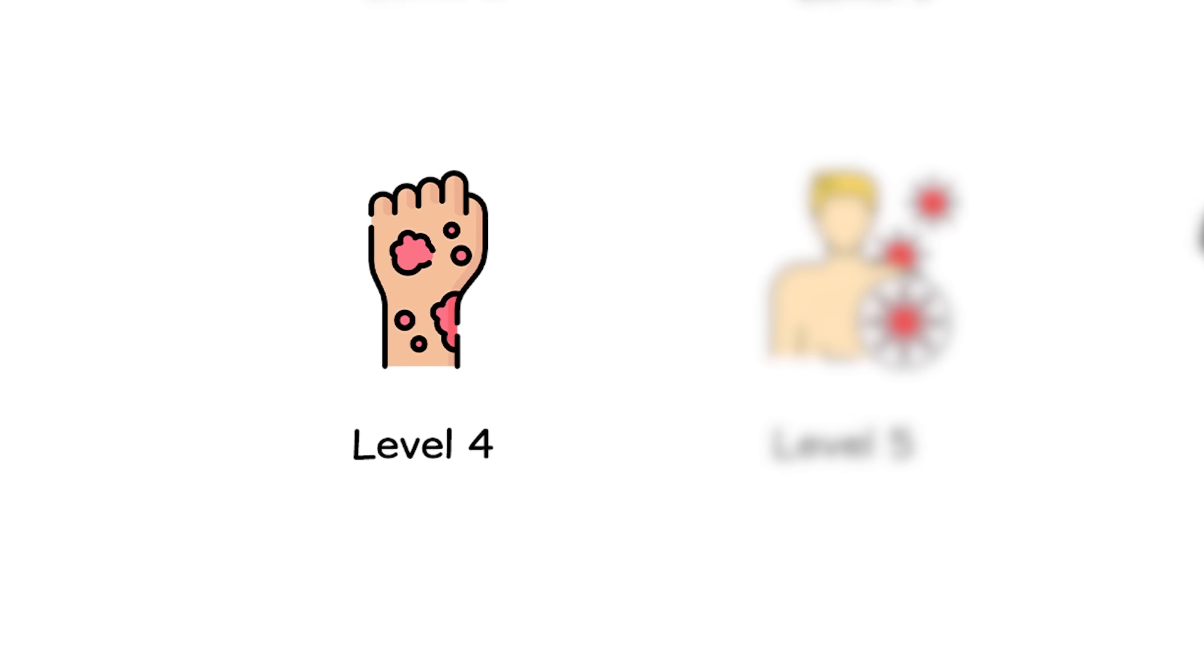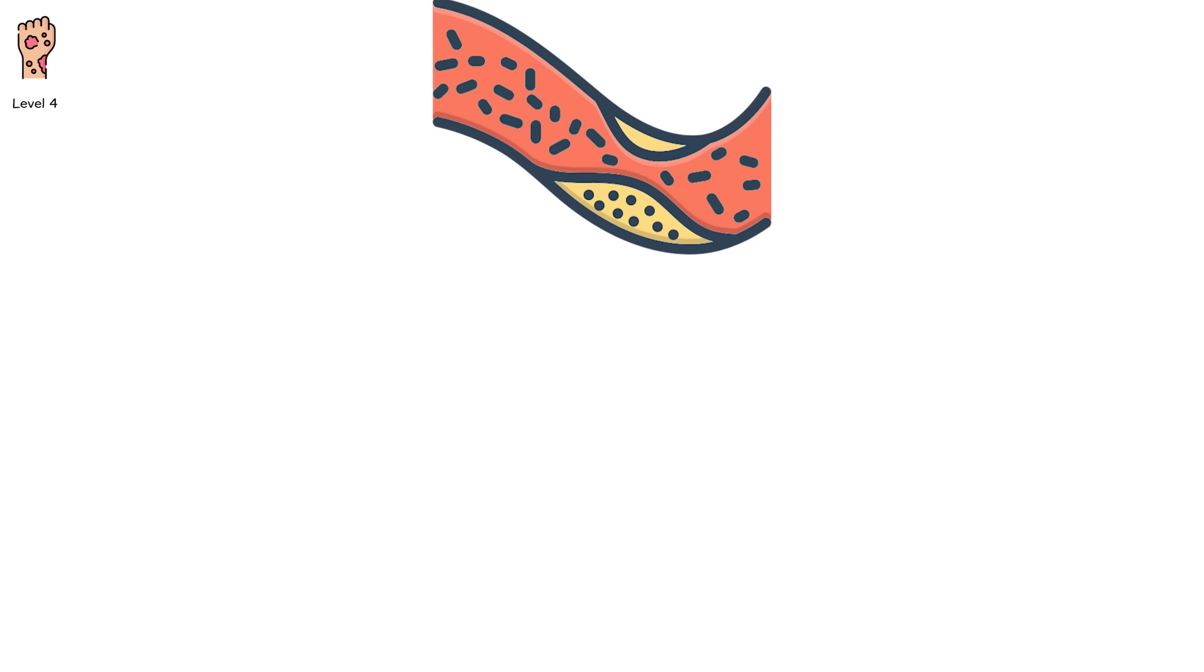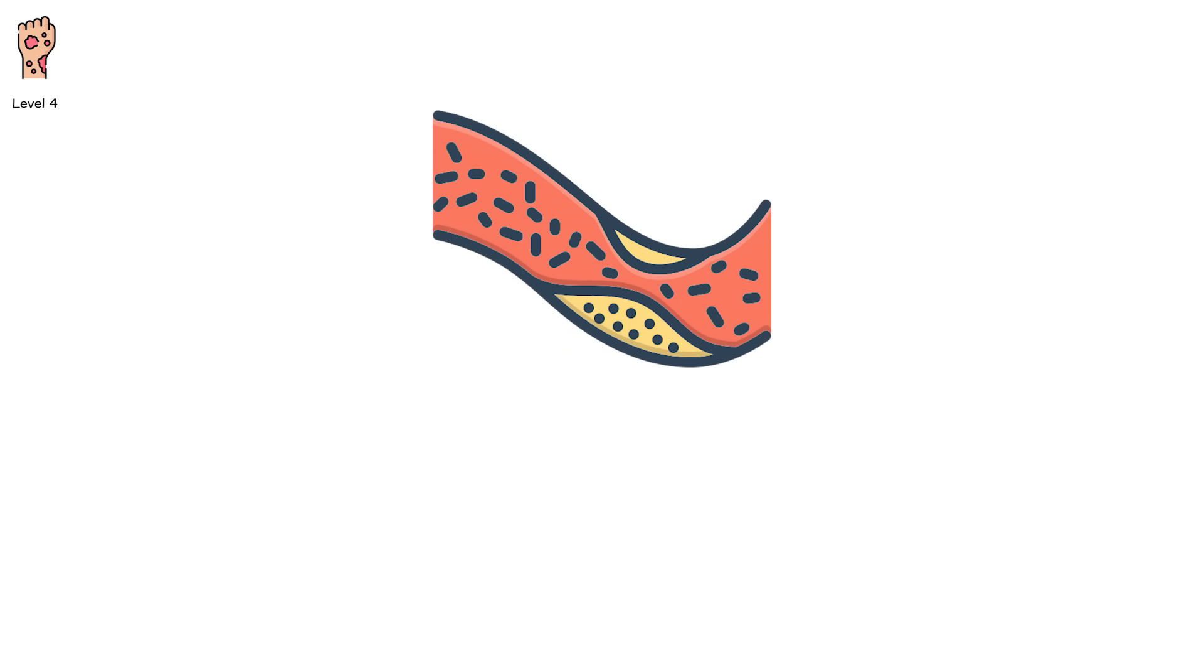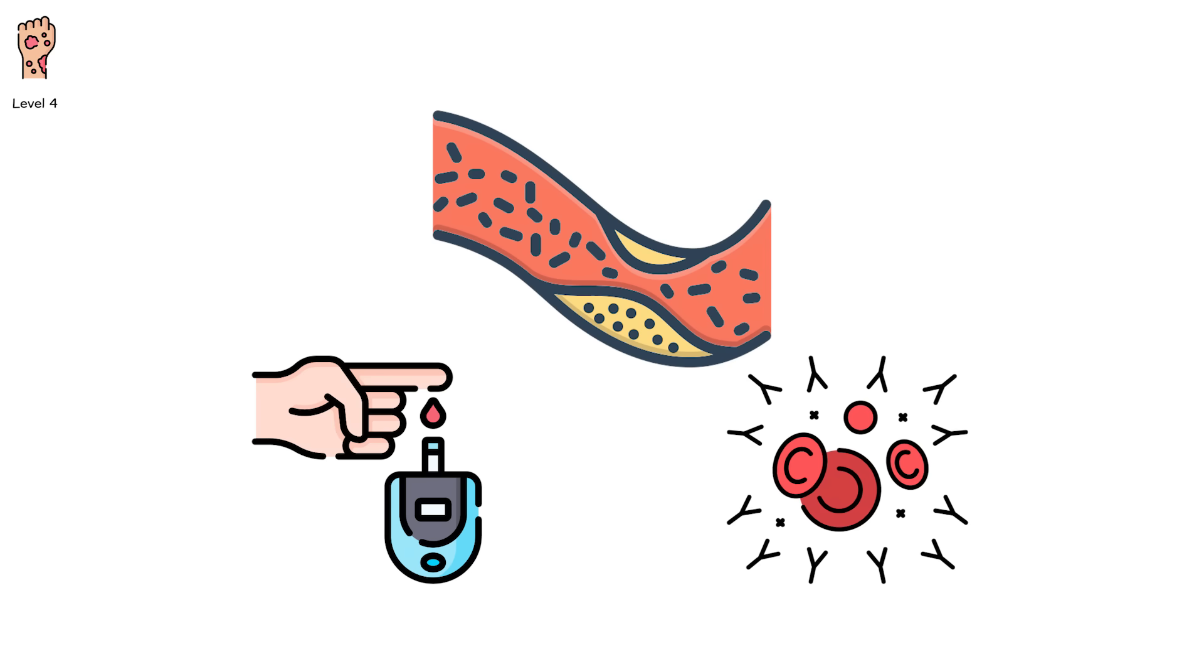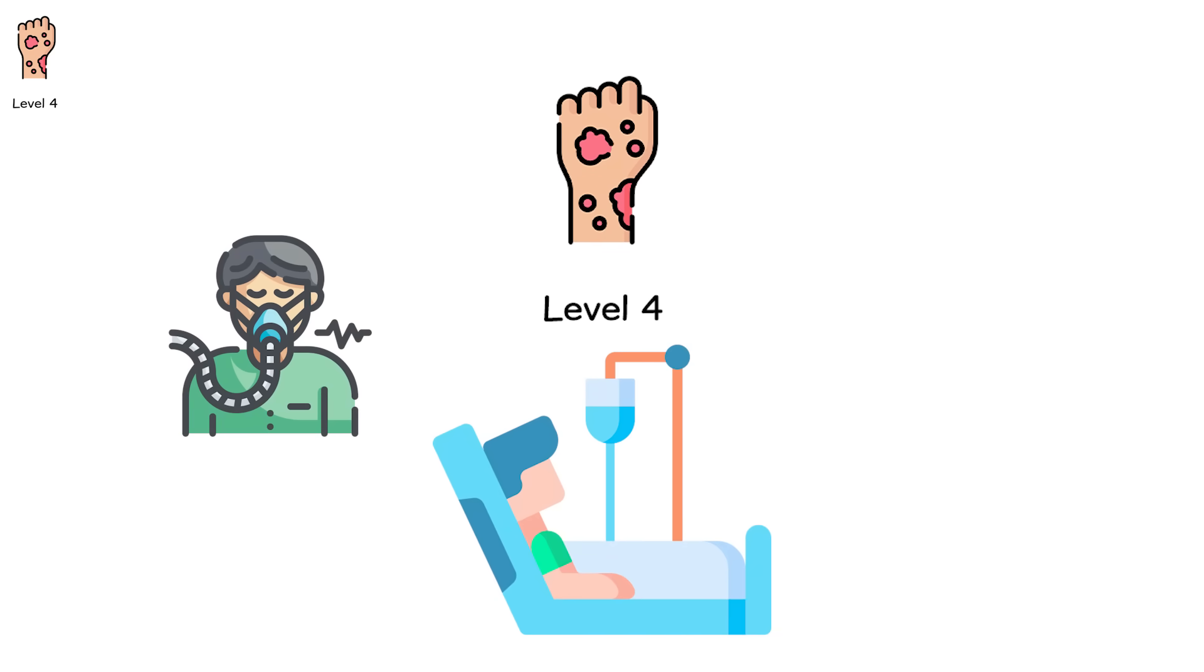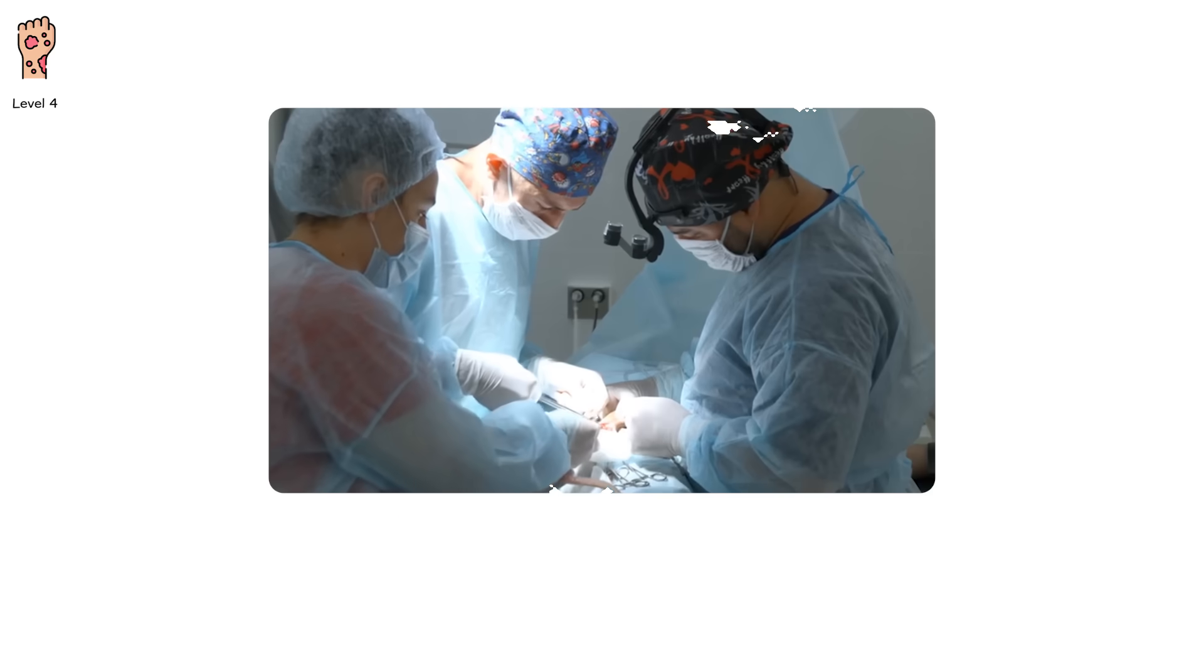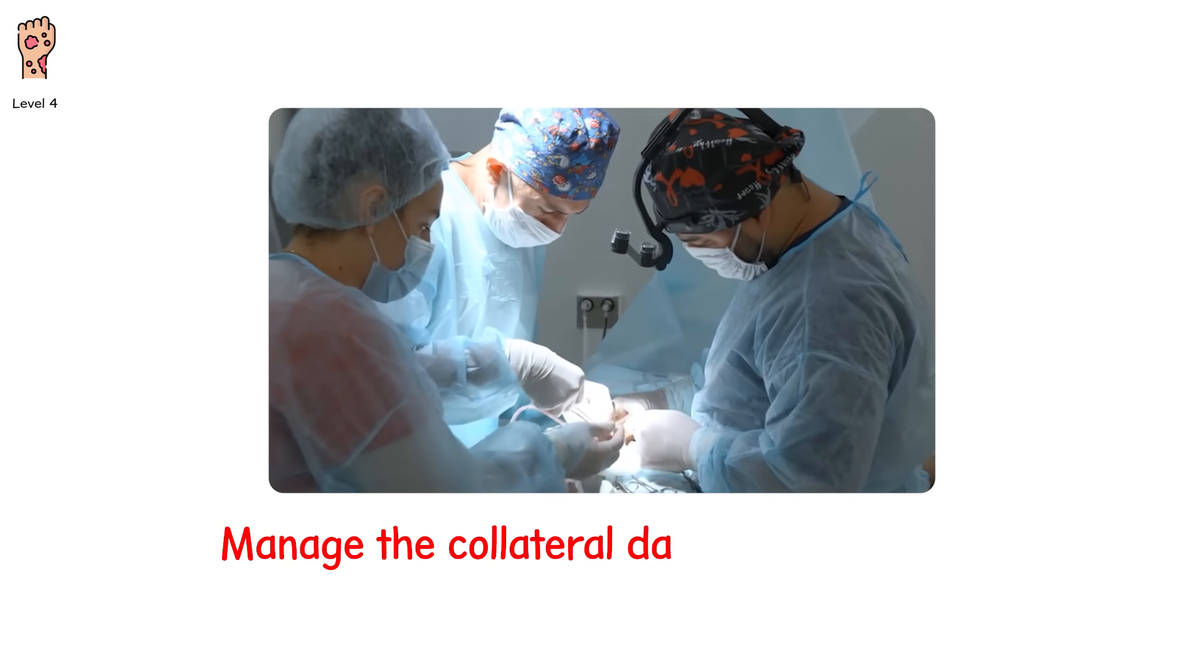Level 4, organ systems begin to struggle. This is the level where disease starts making permanent threats. We're talking about pneumonia that spreads into the bloodstream. Untreated diabetes, causing blurred vision and kidney strain. Autoimmune flares, inflaming the joints or heart. Infections that cross the blood-brain barrier. At level 4, your body is in crisis mode. You're likely in a hospital bed now. Maybe hooked to oxygen. Maybe being monitored hourly. Blood tests. Imaging scans. IV lines. Doctors don't just treat the disease anymore. They manage the collateral damage it's causing.